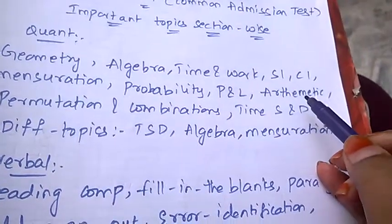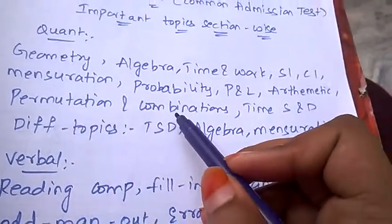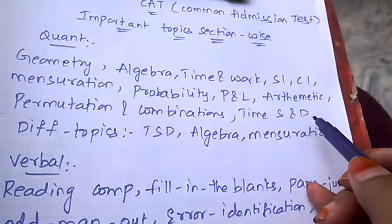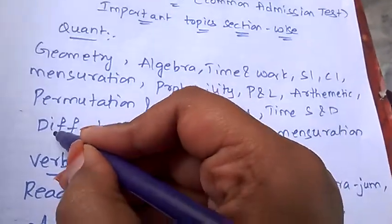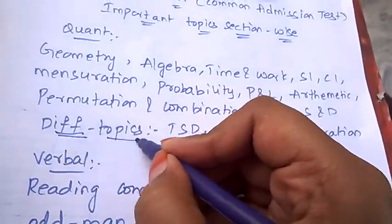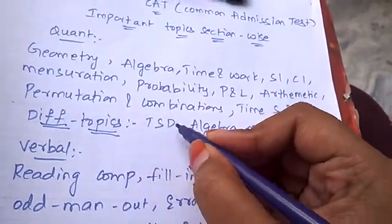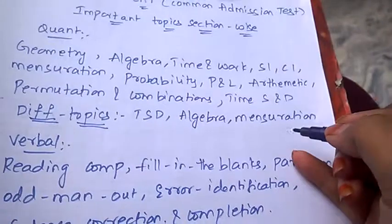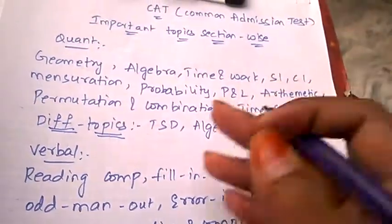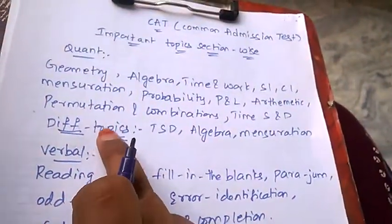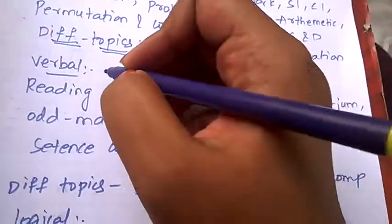Now let's discuss what are the difficult topics in quant. Time speed and distance, algebra, and mensuration are the three difficult topics for quant.